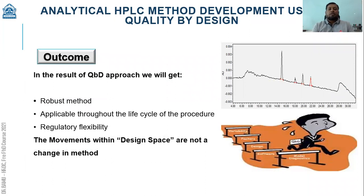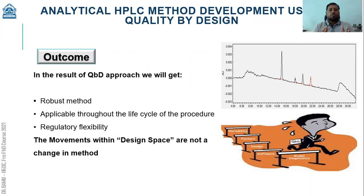The outcome of this QbD approach is a very robust procedure that is applicable throughout the lifecycle management of the drug product — until it exists on the market. There will be regulatory flexibility fulfilling current regulatory norms and requirements. If unknown impurities are observed in the future, there is scope to change the procedure and move within the generated design space, so we need not redevelop or revalidate the procedure within that particular design space.